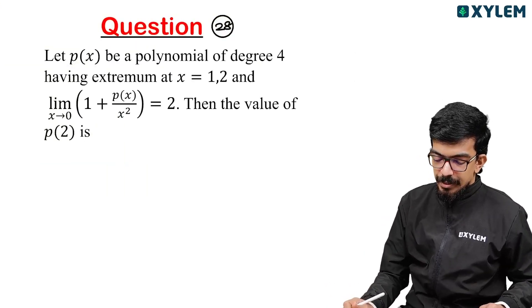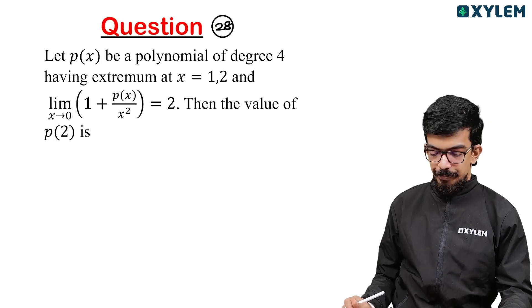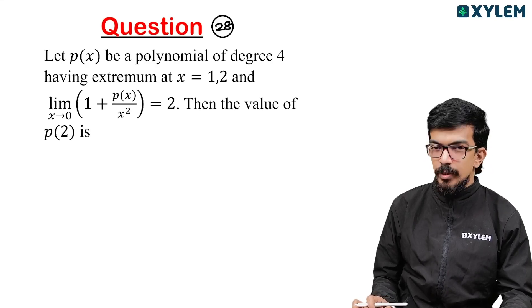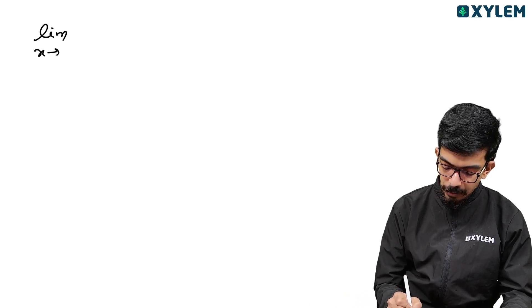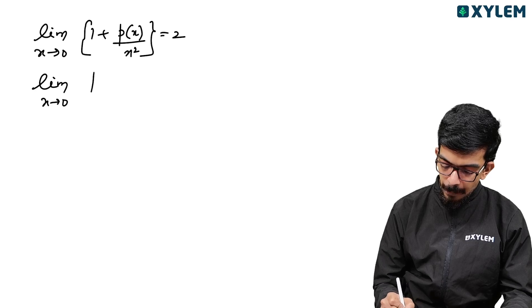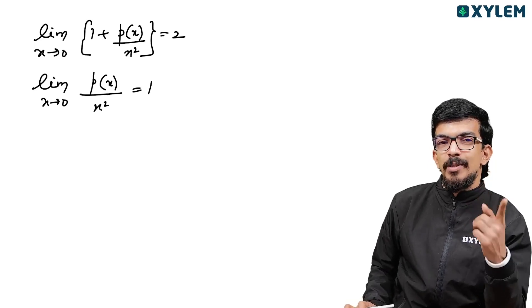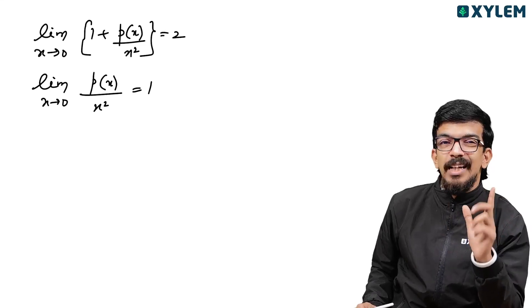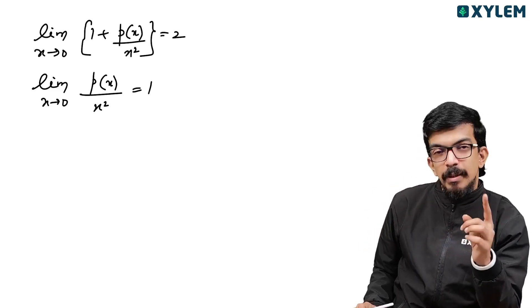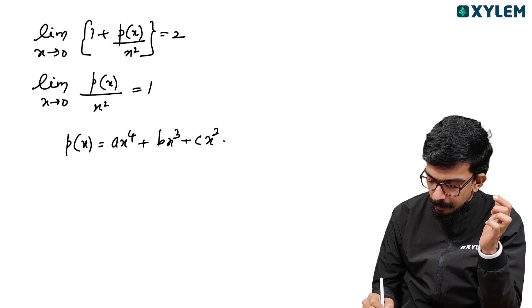Next question: Let p(x) be a polynomial of degree 4 having extrema at x equals 1 and 2, and limit as x tends to 0 of 1 plus p(x) over x squared equals 2. Find the value of p(2). Since the limit equals 2, we get limit of p(x) over x squared equals 1 as x tends to 0. So p(x) equals ax^4 plus bx^3 plus cx^2 plus dx plus e, and c equals 1, d equals 0, e equals 0.